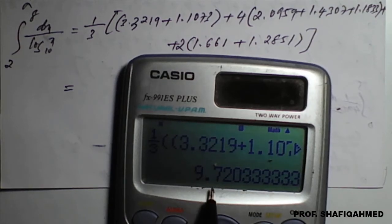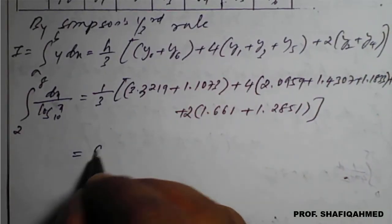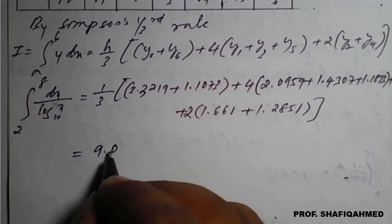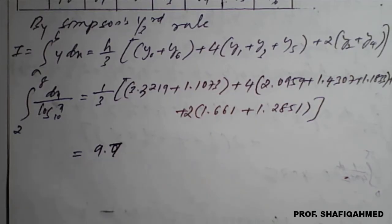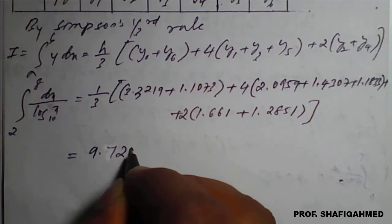See the answer here. It is showing 9.72033 and so on. We will take 4 decimal places: 9.7203.